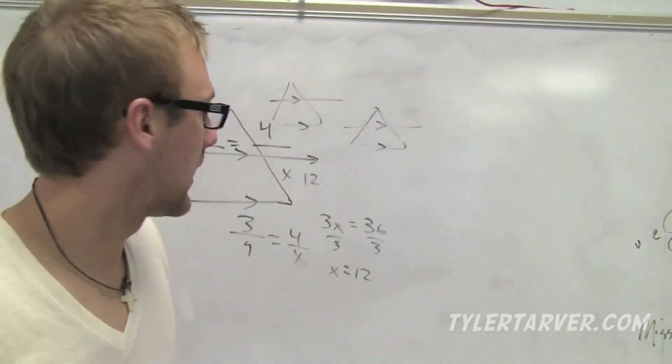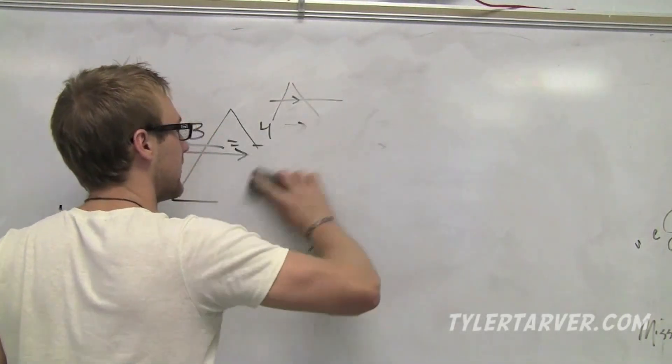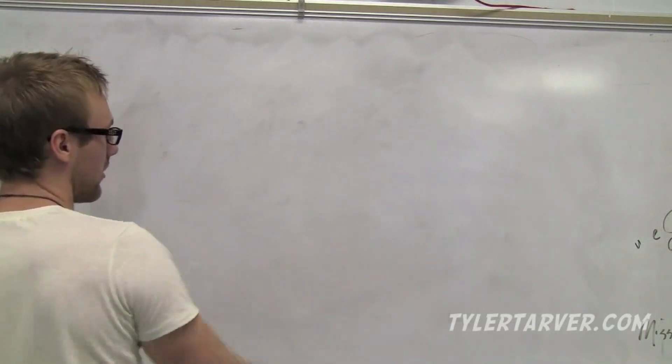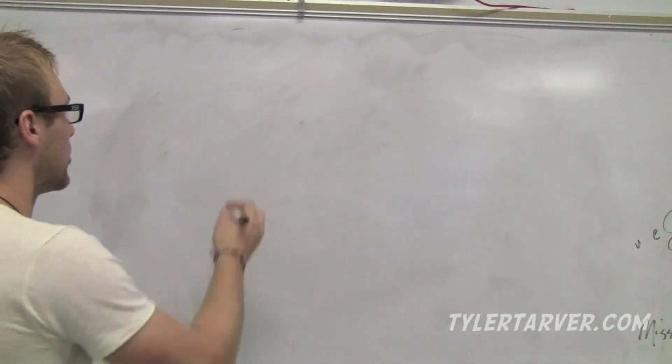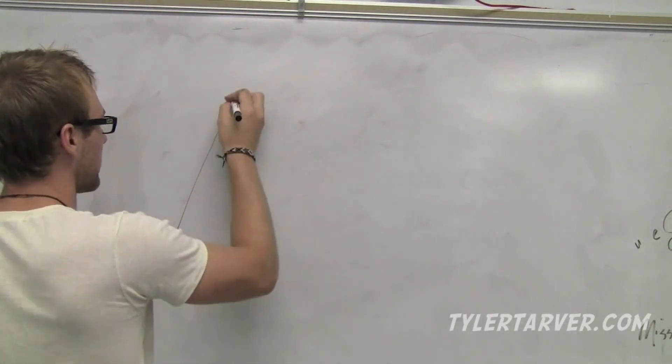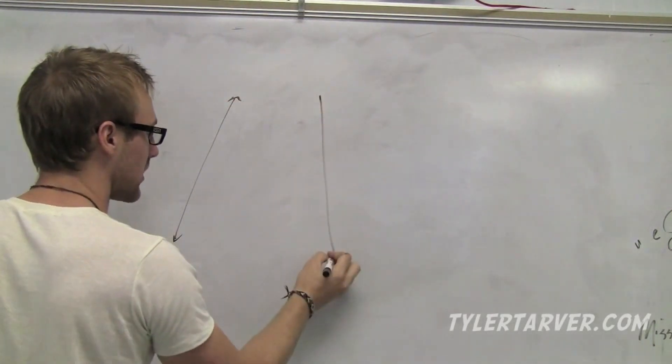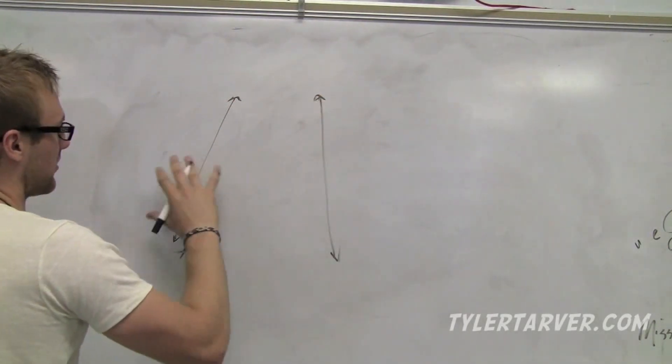Last thing. Or not last thing. Last thing until the next thing. Is the transversal proportionality. Which means, if you have two transversals, just say those are two lines. They're not parallel, they're two lines.